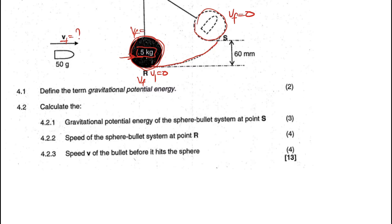The first question asks to define gravitational potential energy. Gravitational potential energy is the energy an object has due to its height above the ground, or due to its height above the reference point.